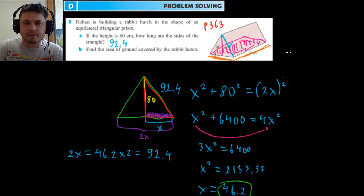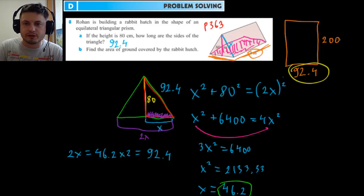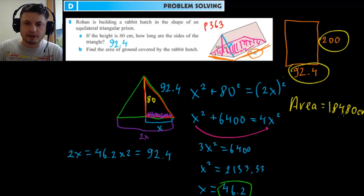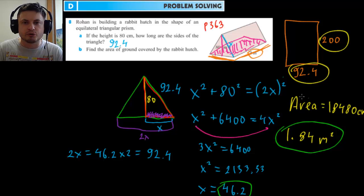To find the area we look at this from the top. We have a rectangle with one side being 92.4 and the other being 200 centimeters. Don't forget to convert 2 meters to centimeters, otherwise you won't get the right answer. Area = 92.4 × 200 = 18,480 cm². To convert to square meters, divide by 10,000, giving 1.84 m².